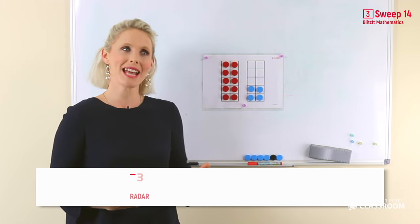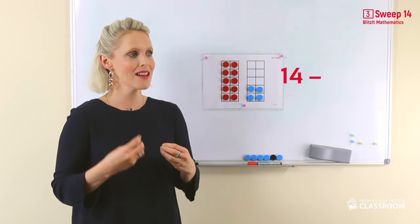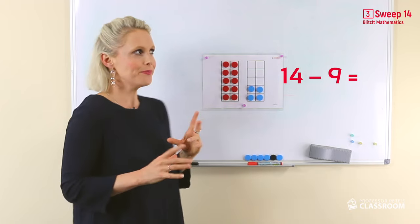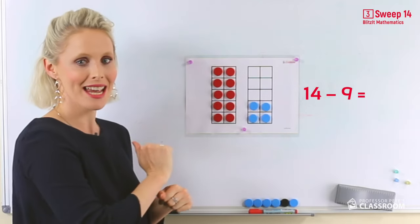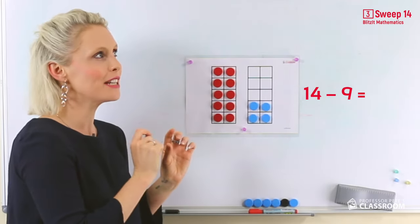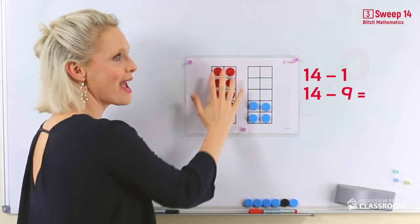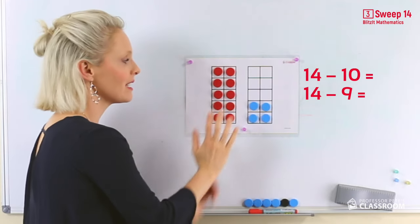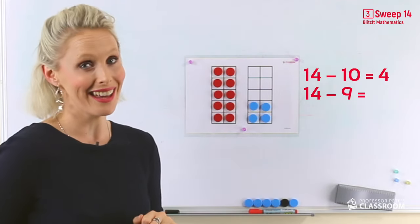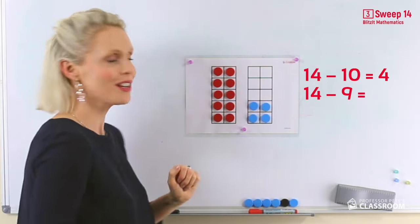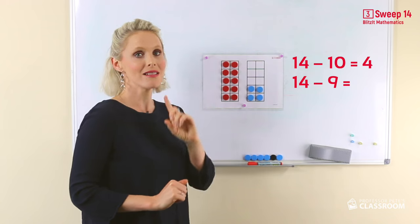What happens if we had 14 take away 9? Here's 14. Now if I did 14 take away 10, it would equal 4. But we're not doing that, are we? We're doing 14 take away 9.